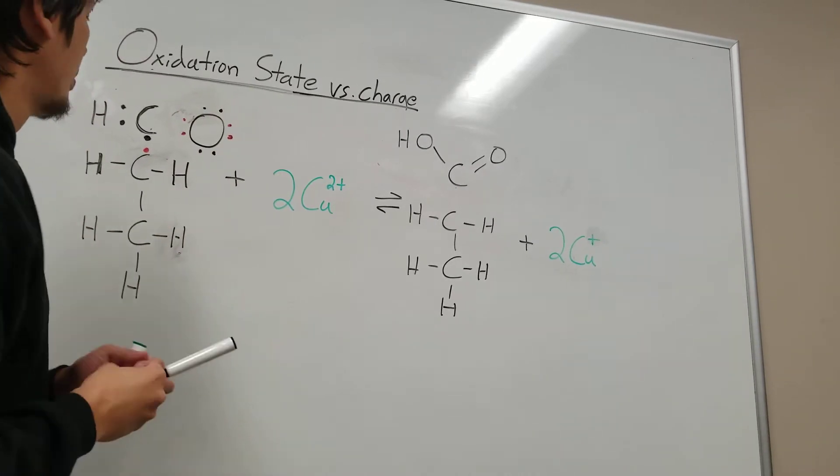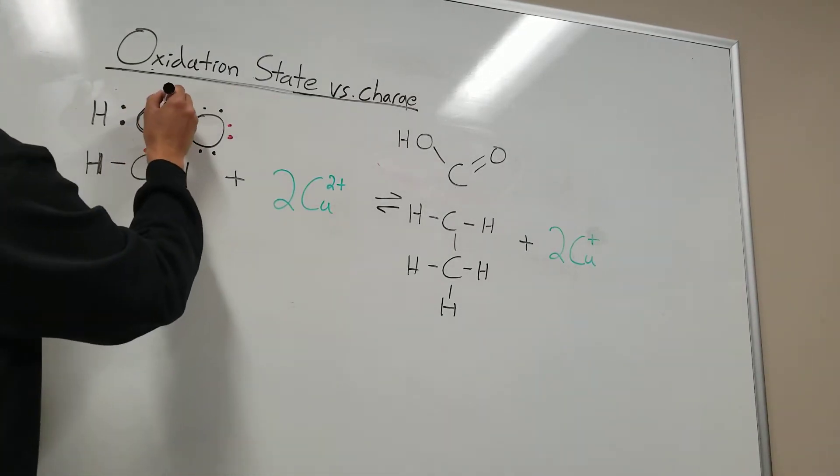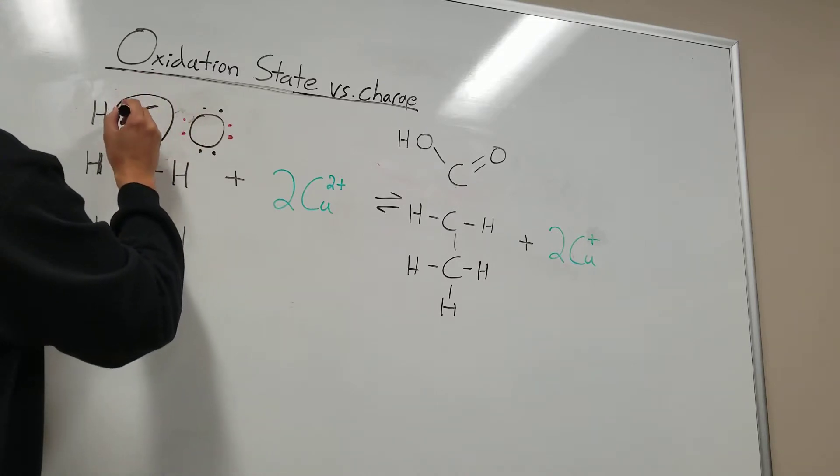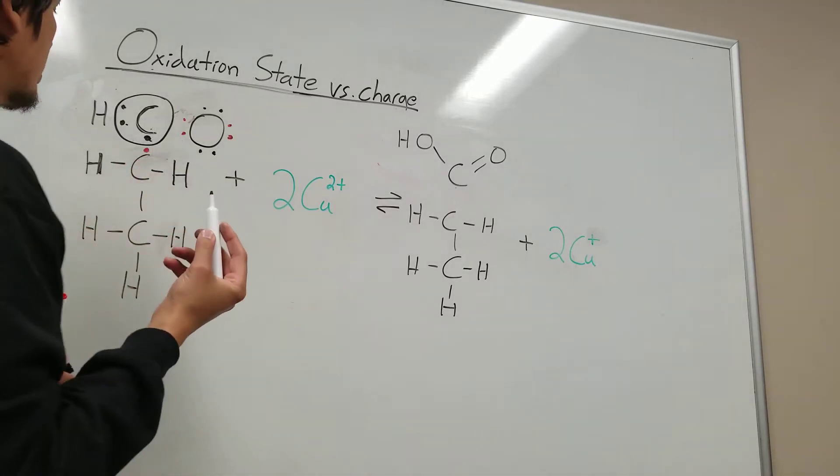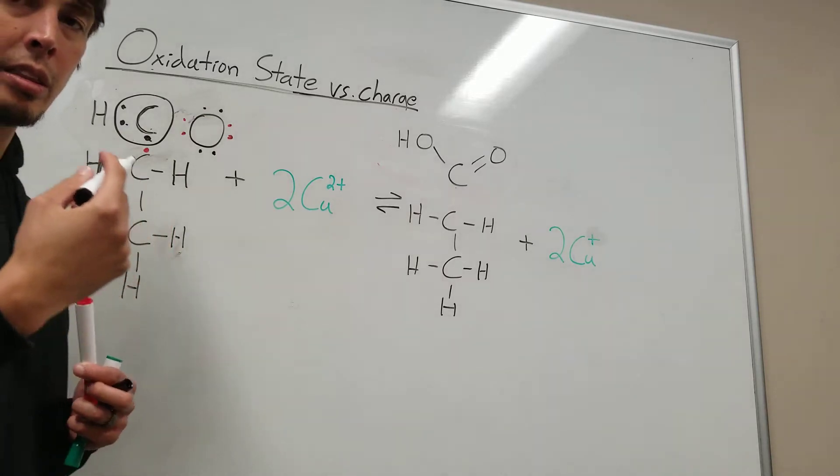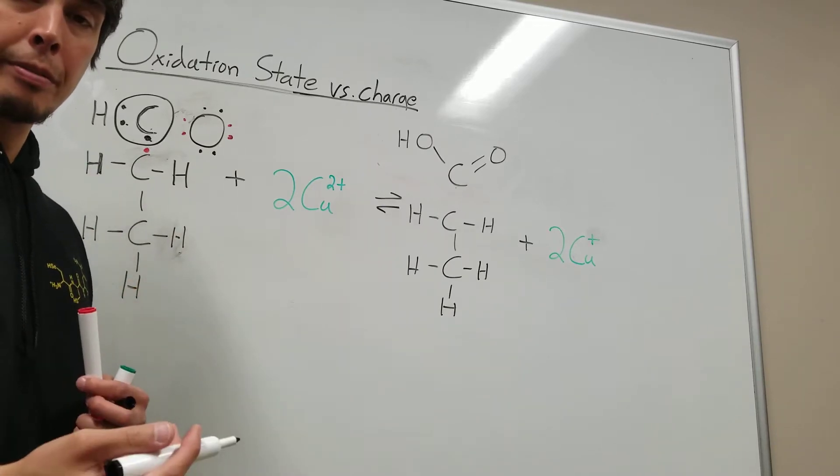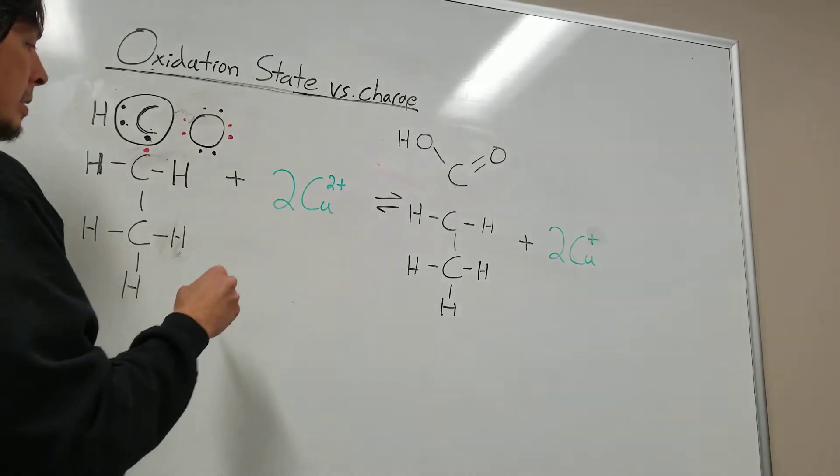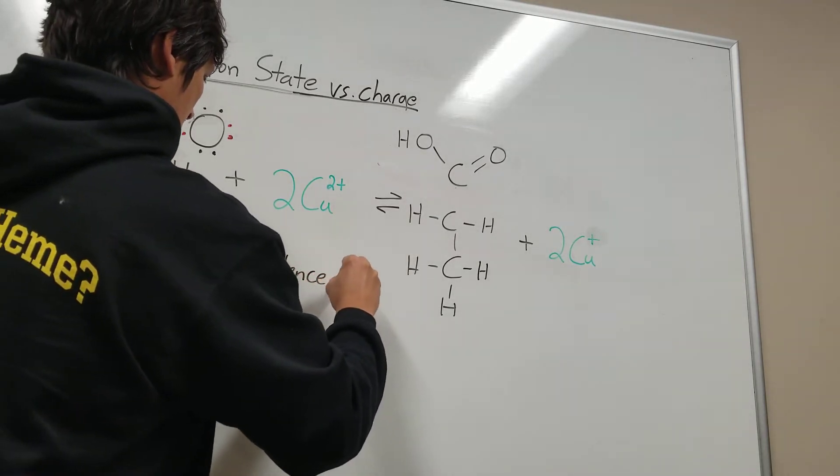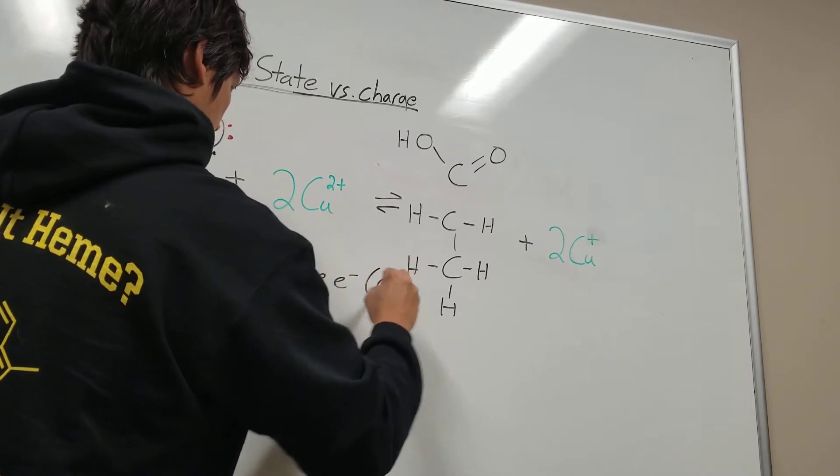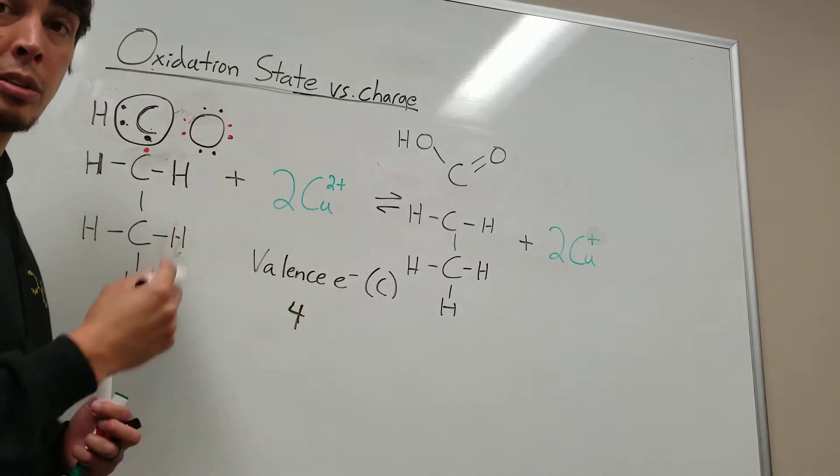Now we count up the number of electrons that were assigned to the carbon. These are the electrons—I'm going to circle them. One, two, three. So we had three electrons that are assigned to the carbon. And how many valence electrons does atomic carbon have? The valence electrons for carbon is four. This carbon only has three.